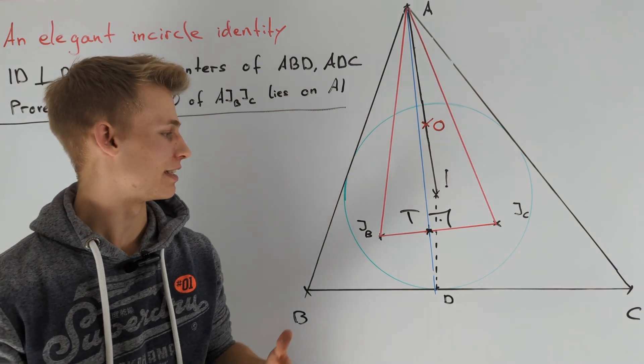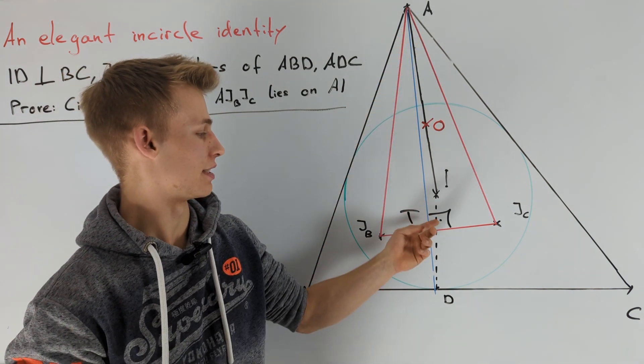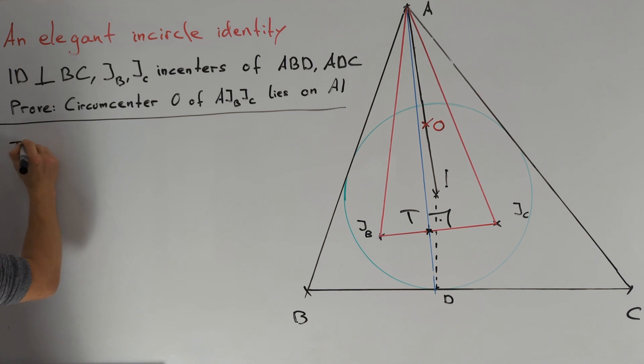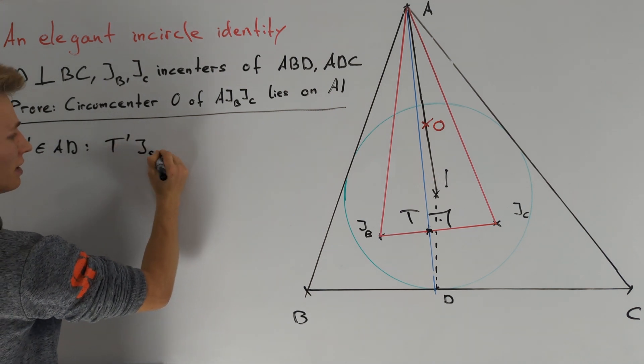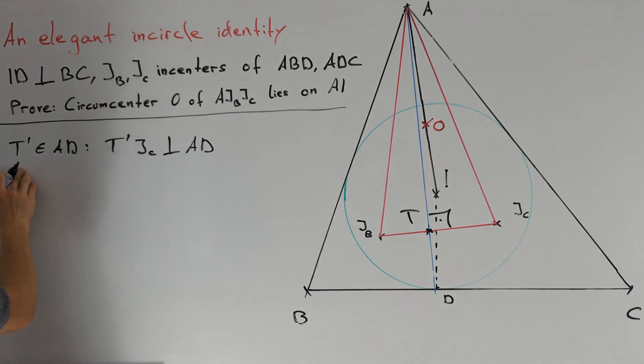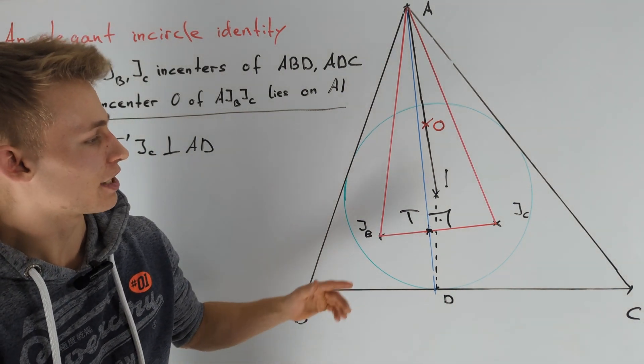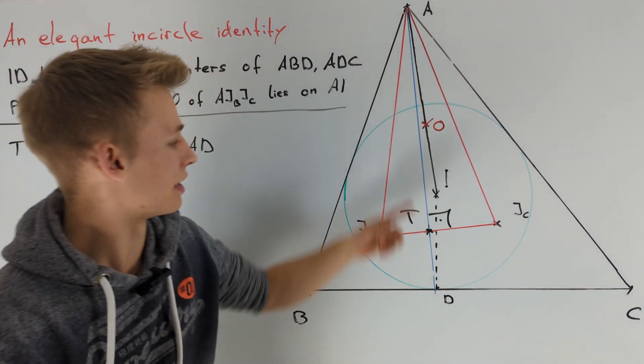We figured out it's enough to prove angle JCTA equals 90 degrees. To do this, we introduce point T' on line AD such that T'JC is perpendicular to AD, and prove T' equals T. Note that T' is the touching point of the incircle of triangle ADC with line AD.